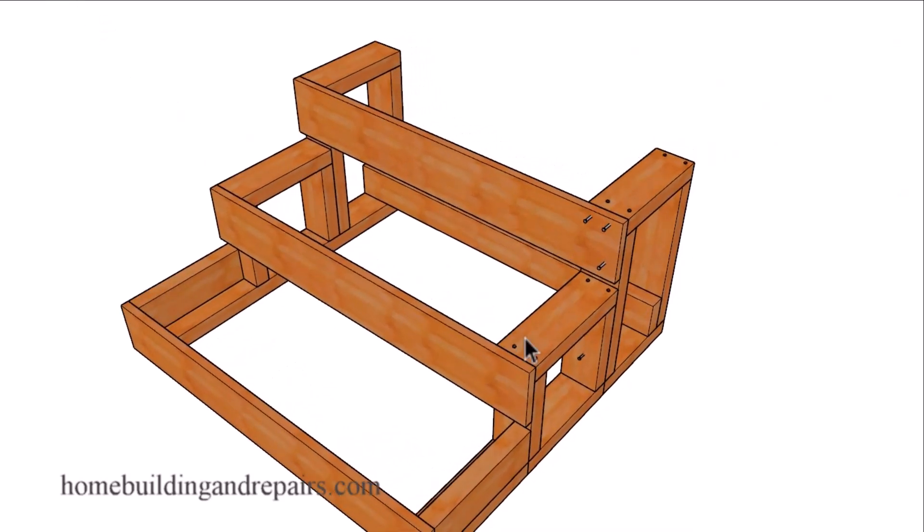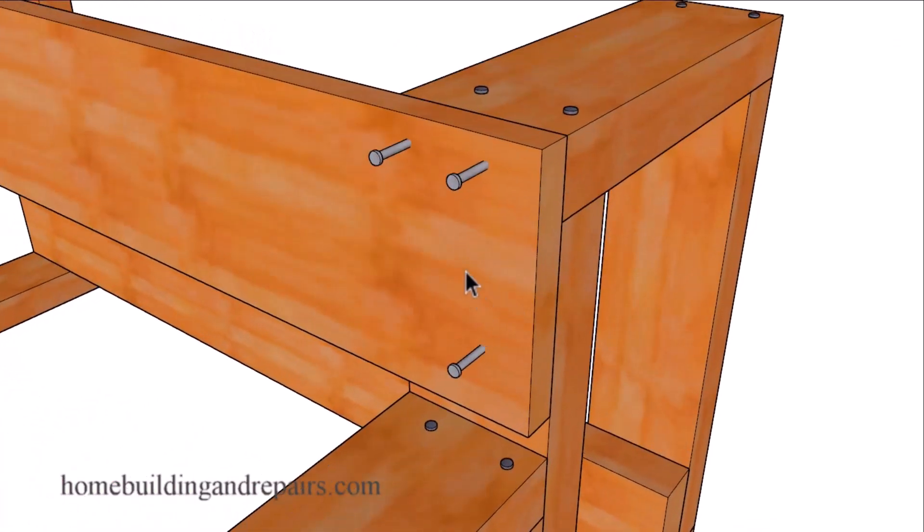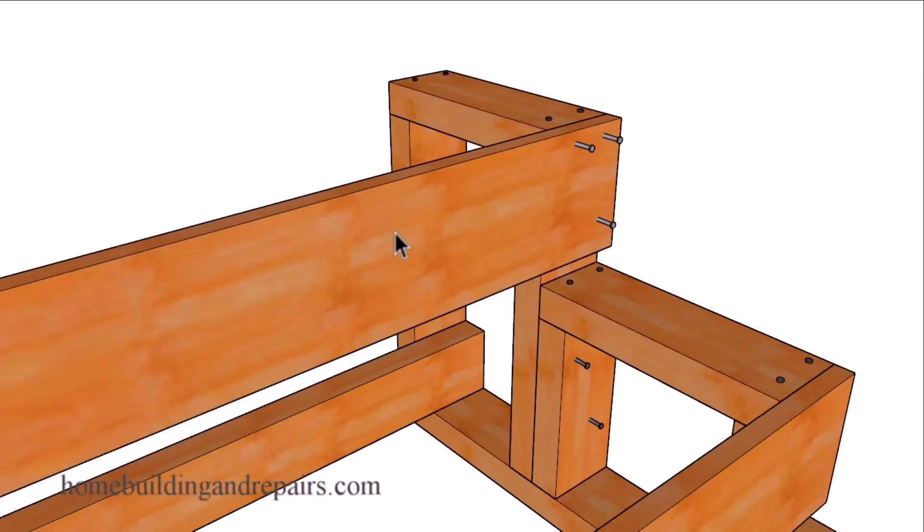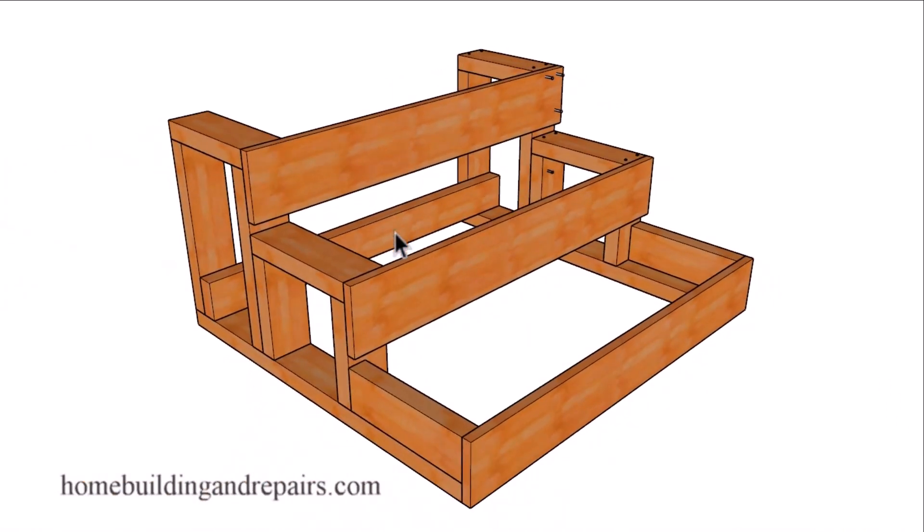And these boards can be attached with screws or 8D nails. You could always use four or five of them here instead of just using three like I have here. And of course, once you start to fasten all of this together, you're going to get a pretty good idea of what the stairway is going to look like.